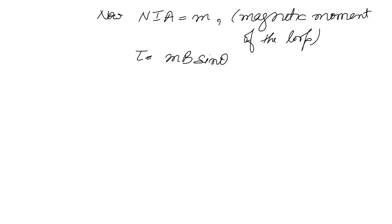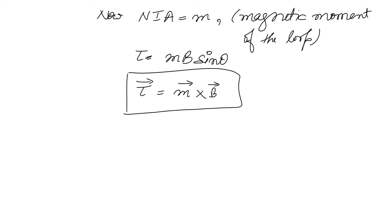If we remove sin theta and write it in cross product form, it becomes a vector expression. So in vector notation, tau vector = m vector cross B vector. This is the torque in vector form.